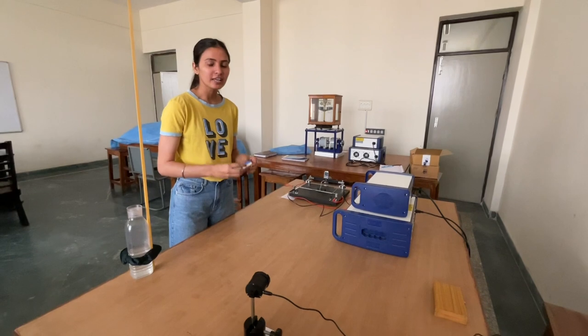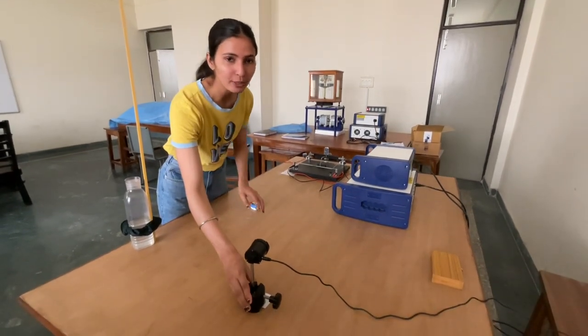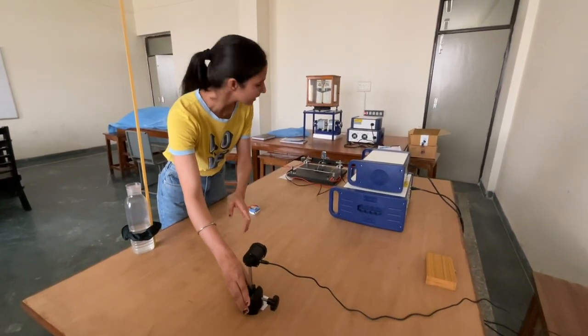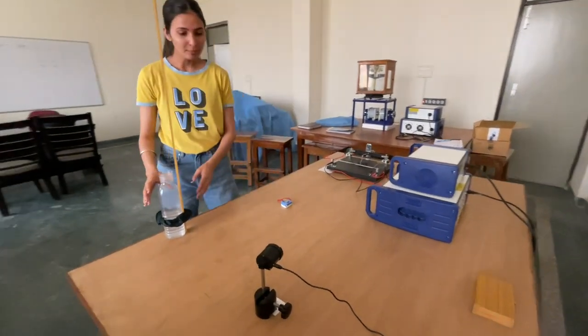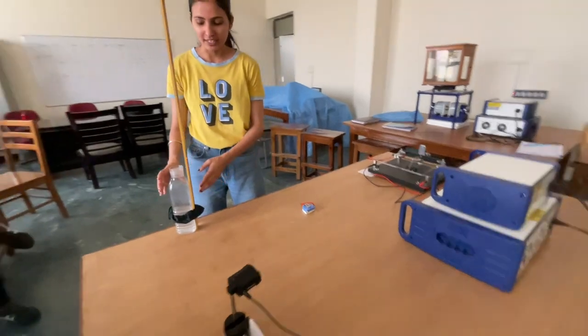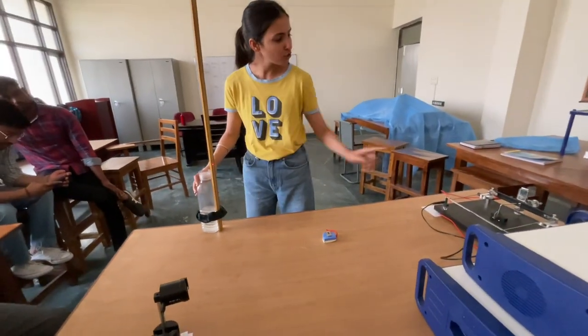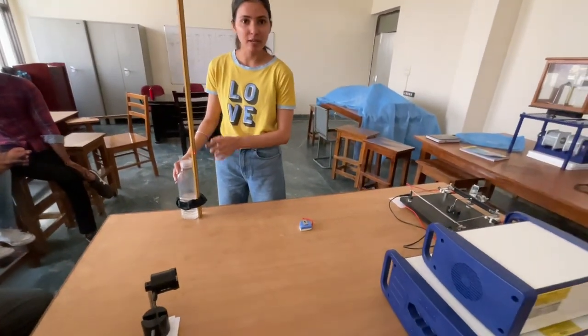From the help of the stand, we set the diode laser at the appropriate distance and height so that the laser reflection is visible on the scale. Next, we will connect the scale.